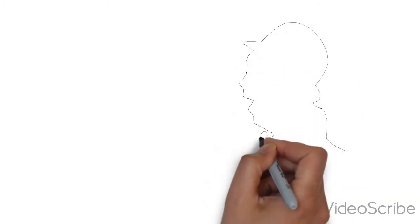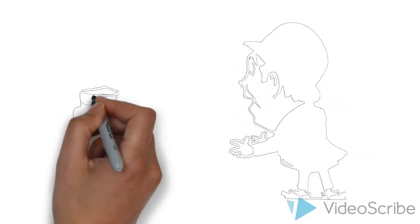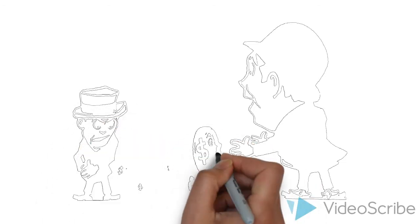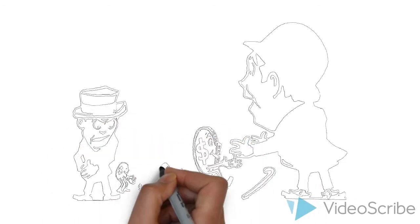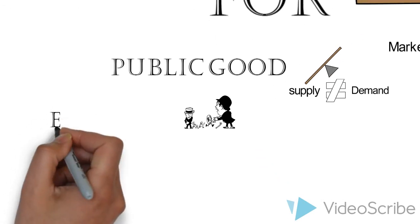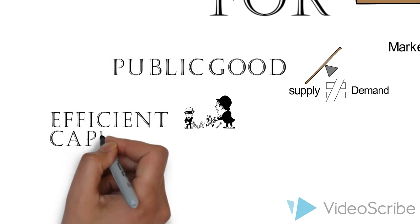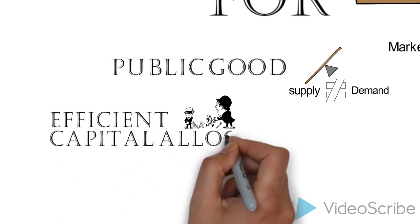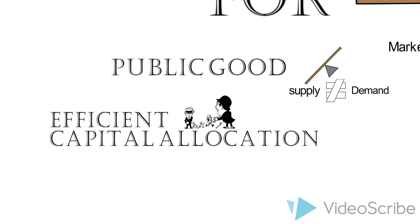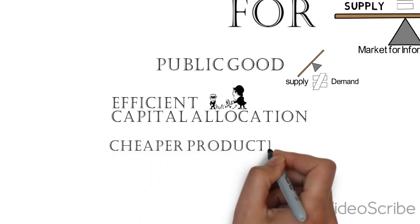Accounting disclosure is important because it's the oil that lubricates the market. Correct information about the true economic condition of organizations allows for better decisions by investors, who put scarce resources into those organizations that can make the best use of them. In other words, it leads to efficient capital allocation.